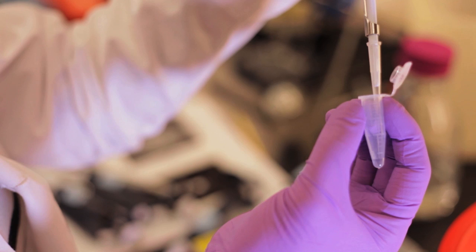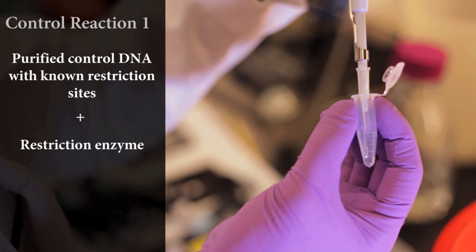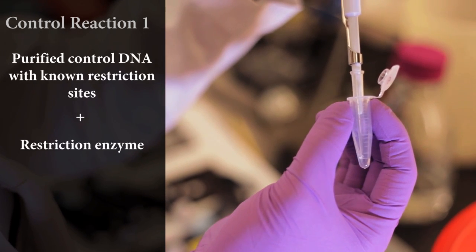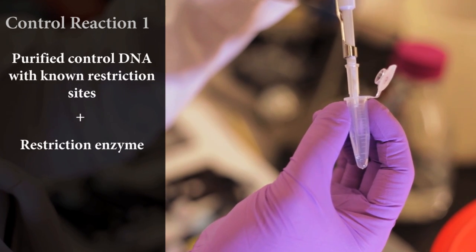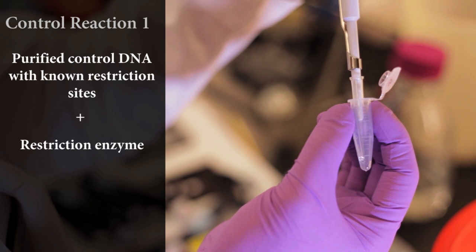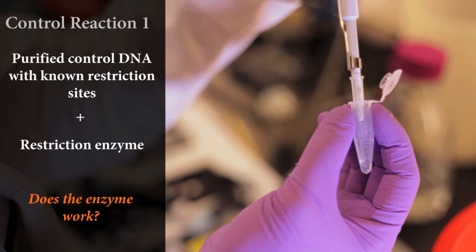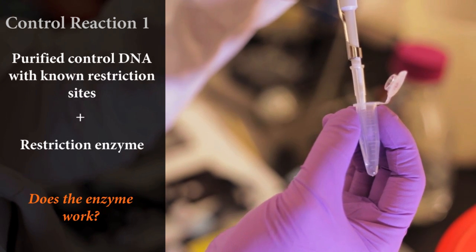To determine if you have a contaminant in your experimental DNA, we recommend first running a highly pure controlled DNA containing restriction sites for your enzyme of interest. That will help you to determine that the enzyme is in fact active.